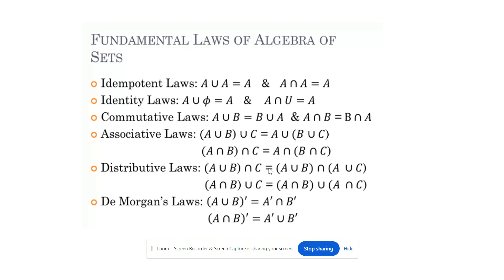Associative law: A union (B union C) is equal to (A union B) union C. Then distributive law — there is distribution over intersection and distribution over union. That is, A union (B intersection C) equals (A union B) intersection (A union C), and similarly for union.